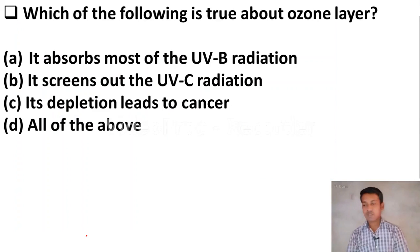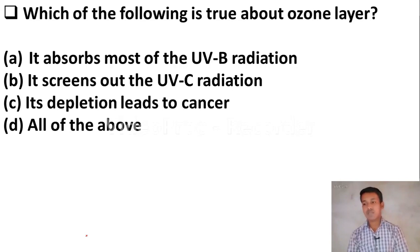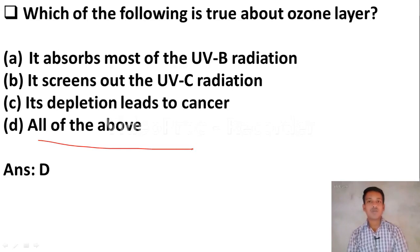Next question: which of the following is true about the ozone layer? Option A, it absorbs most of the UVB radiation. Option B, it screens out the UVC radiation. Option C, its depletion leads to cancer. Option D, all of the above. The right answer is Option D — all of the above statements are correct about the ozone layer.